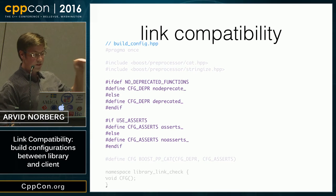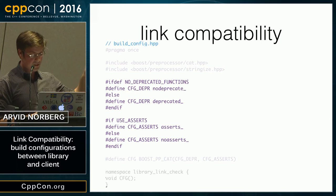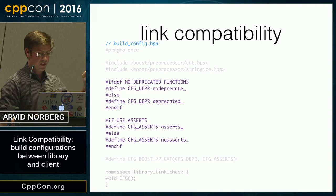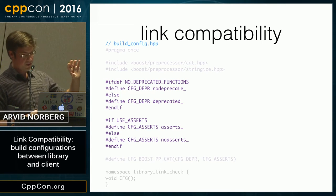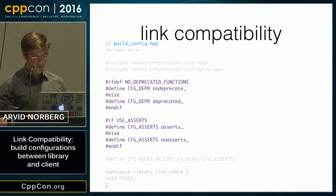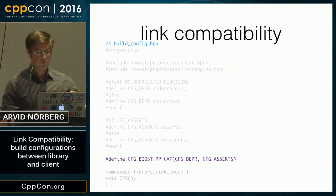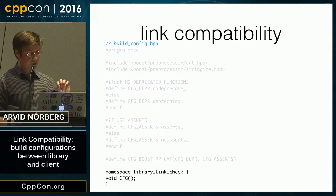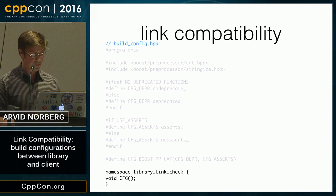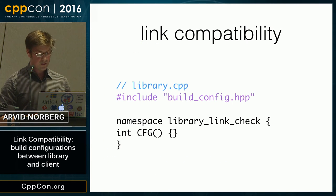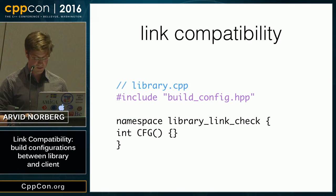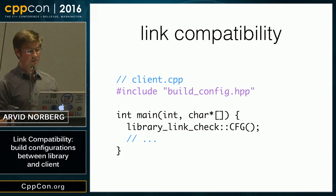This looks at the current build configuration and creates defines that name either no-deprecate, deprecated, asserts, or no-asserts. You can imagine that you have more of these build configurations. You concatenate these names using Boost Preprocessor, obviously. Then you declare a function with this name. In your library, you define an empty function with this name.